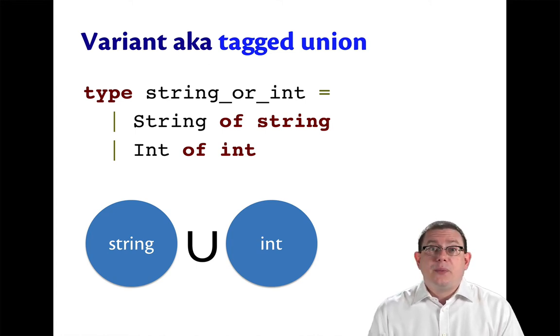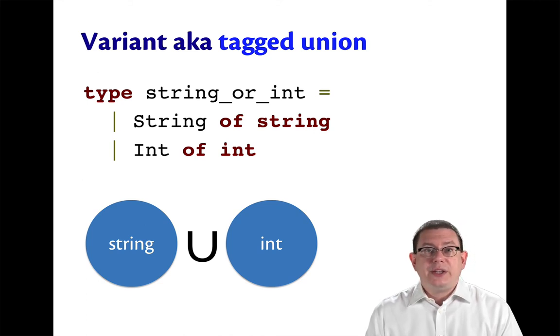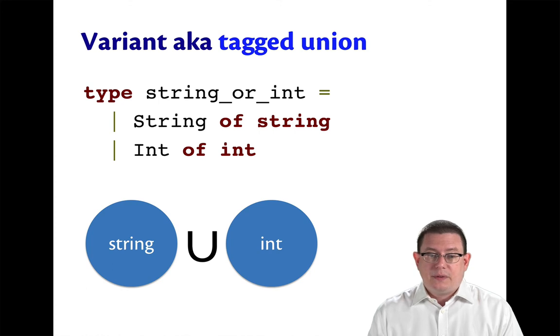So here's an example. We could have a variant type that represents a value that is either a string or an int. So it has two constructors, capital string and capital int, each of which carries along a value of the appropriate type.